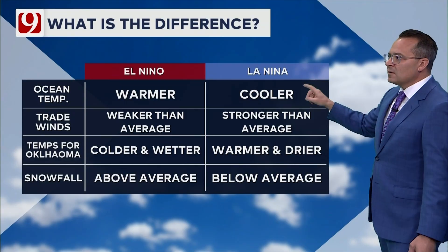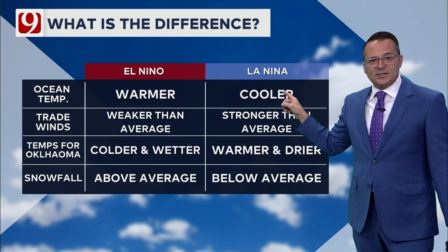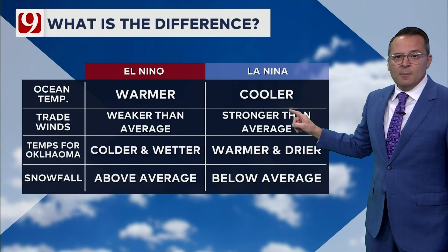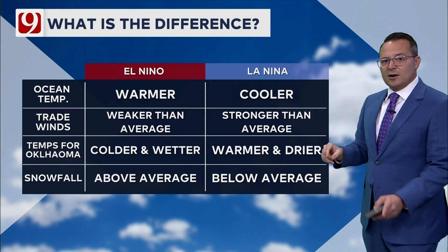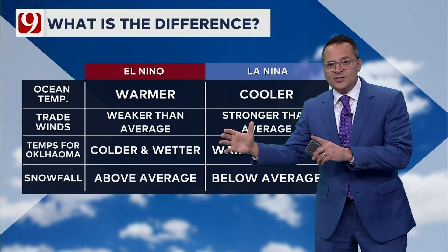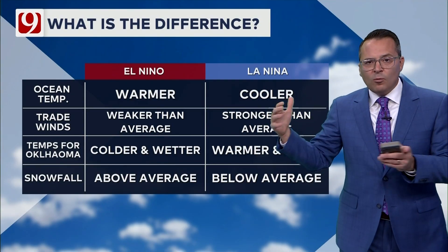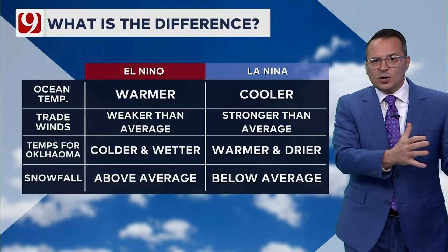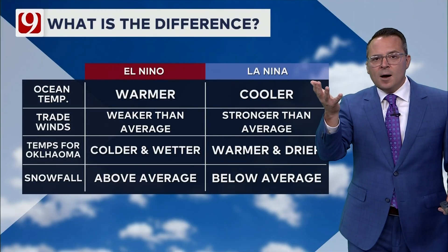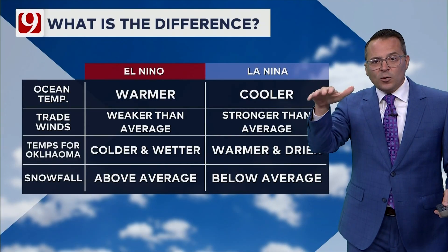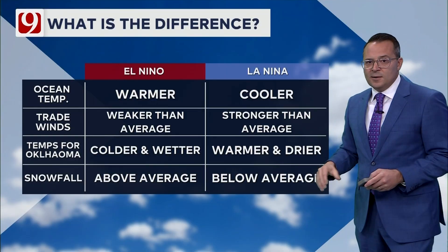La Niña — the water is cooler than average west of South America in the Pacific because of the stronger trade winds that are blowing from east to west. It removes that warm water from the surface and lets that colder water bubble up towards the surface, so typically colder water overall.